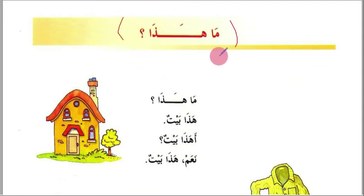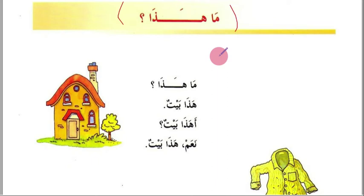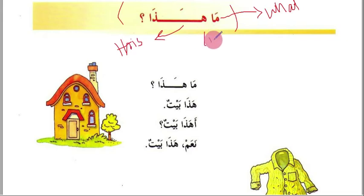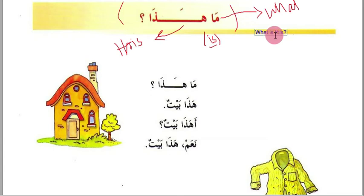This part of the lesson teaches you how to ask about inanimate objects. 'Ma hadha' means 'what is this'. 'Ma' means 'what' and 'hadha' means 'this', and 'is' is hidden in the syntax. So 'ma hadha' means 'what is this'.